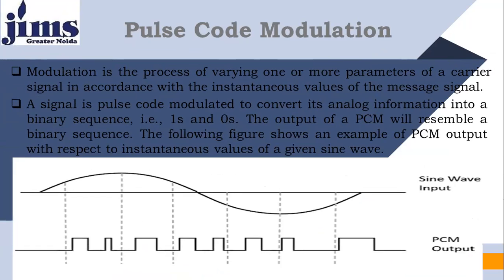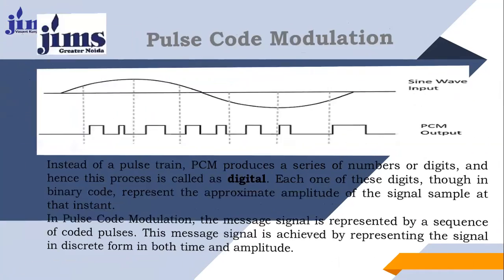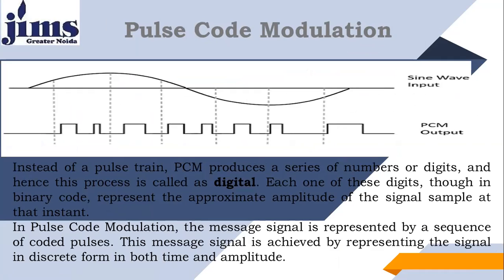Look at the picture. We have an analog signal in the form of a sine wave. Sine waves resemble analog signals — an analog signal changes every instant of time. The sinusoidal signal changes its amplitude at every instant of time. The second picture is the PCM output, which is a digital signal. This sine wave is converted into a digital signal in the form of zeros and ones. PCM produces a series of digits, and hence this process is called digital.